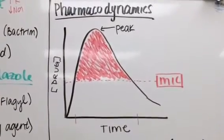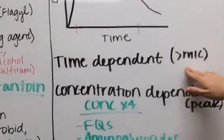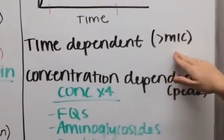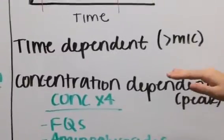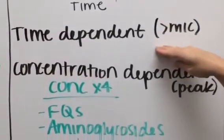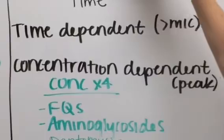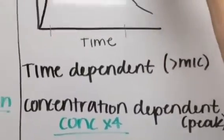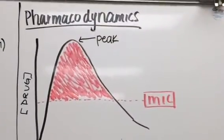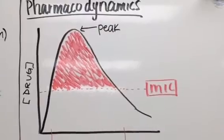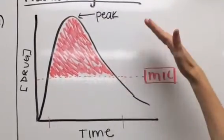Our time dependent are going to be focused on something called the MIC or minimum inhibitory concentration. It's really important for our time dependent antibiotics that they're staying above this MIC line. We're only going to kill bacteria when our concentration is above this line essentially.